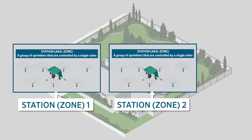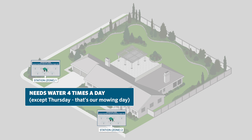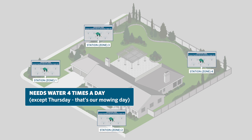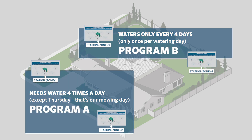Let's say that you have two newly seeded zones — stations one and two — and because it's new grass, you may need to water four times a day, with the exception of Thursday because that's a mowing day. Let's also say you have another two zones with trees that need to be watered once per day, but every four days. Therefore, we'll divide these four stations into two programs: Program A with stations one and two for new grass, and Program B with stations three and four for the trees.